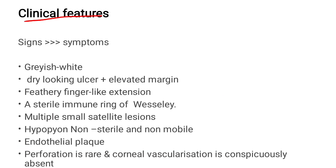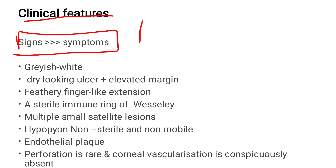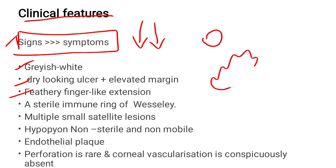Regarding clinical features, signs are more prominent than symptoms. The ulcer is greyish white in colour, dry looking, with elevated margins. A notable feature is feathery finger-like extensions at the margin of the ulcer.